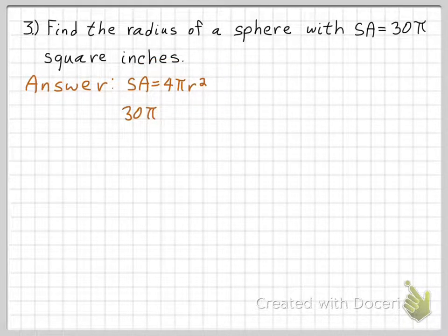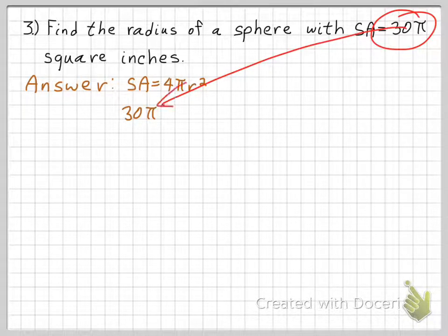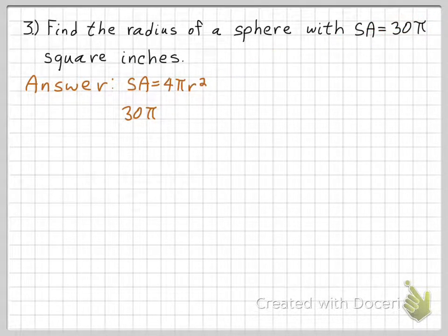But in this case, I know that the surface area is 30 pi. So that's where that 30 pi comes from. I'm substituting that in for surface area. And then moving along, you have 30 pi is equal to 4 pi r squared. So I'm just bringing that down since I'm actually trying to find the radius. So I notice that I have a pi on both sides of the equation. So I can divide those out.